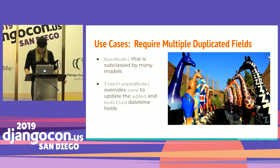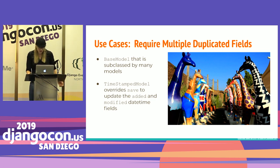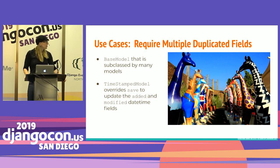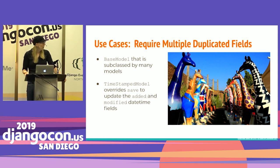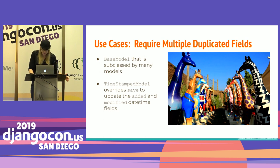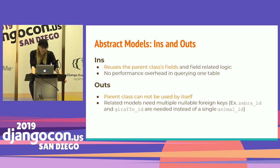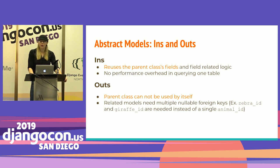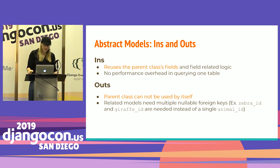Abstract models work best when there's a lot of duplicated fields. If there's only a few fields, it's better to be explicit and just define them on each model. Great examples include base or core model functionality that all or many of your models inherit — for example, in Two Scoops of Django it walks you through the timestamp model, which adds 'created' and 'modified' datetime fields updated when the record is saved. The advantages are that you can easily reuse the parent class's fields and logic. However, the parent class can't be used in isolation, so if you have related models you'll need a zebra ID and a giraffe ID rather than an animal ID.